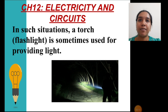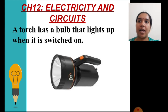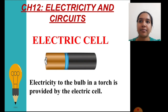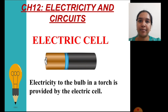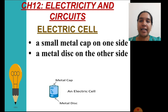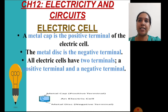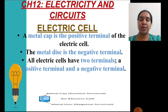In such conditions we use a torch light or a flashlight, because a torch light is an electrical device which has a bulb in it that lights up when it is switched on. Electricity to a torch or to any portable electrical devices like alarm clocks, radios, etc., is provided by the electric cell. The design of an electric cell is: it has a small metal cap on one side and a metal disc on the other side. All electric cells and devices have two terminals — a positive one and a negative one. In an electric cell, the positive terminal is at the metal cap and the negative terminal is at the metal disc.